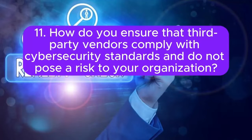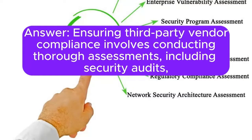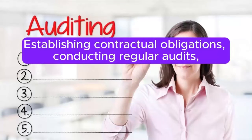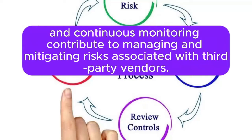Question 11: How do you ensure that third-party vendors comply with cybersecurity standards and do not pose a risk to your organization? Answer: Ensuring third-party vendor compliance involves conducting thorough assessments, including security audits, reviewing their cybersecurity policies, and verifying adherence to industry standards. Establishing contractual obligations, conducting regular audits, and continuous monitoring contribute to managing and mitigating risks associated with third-party vendors.